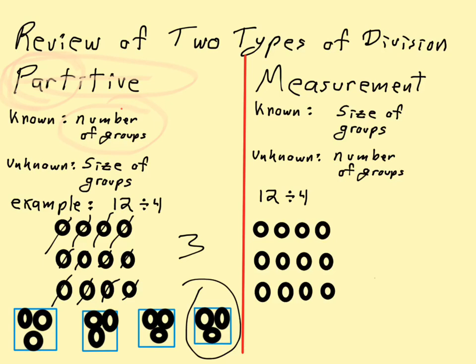Now let's take a look at measurement division. Measurement division says we know what size group we want, we just don't know how many groups we have. So in this case, 12 divided by 4 looks a little bit different.